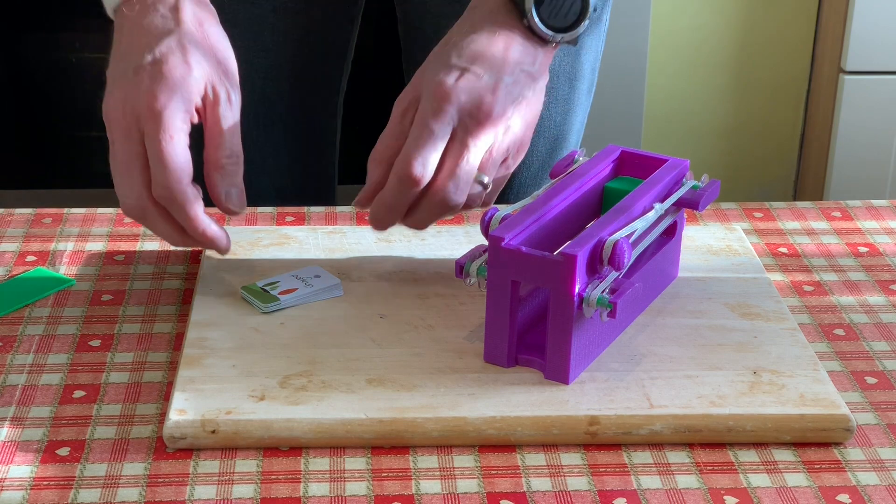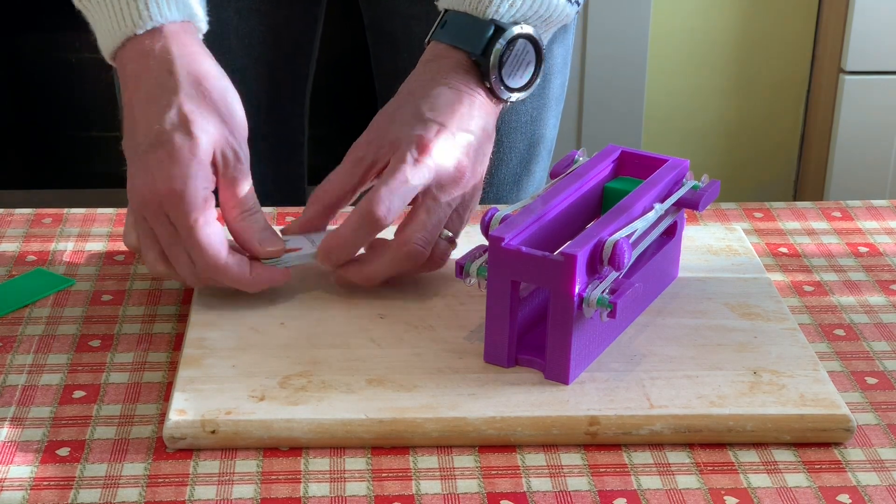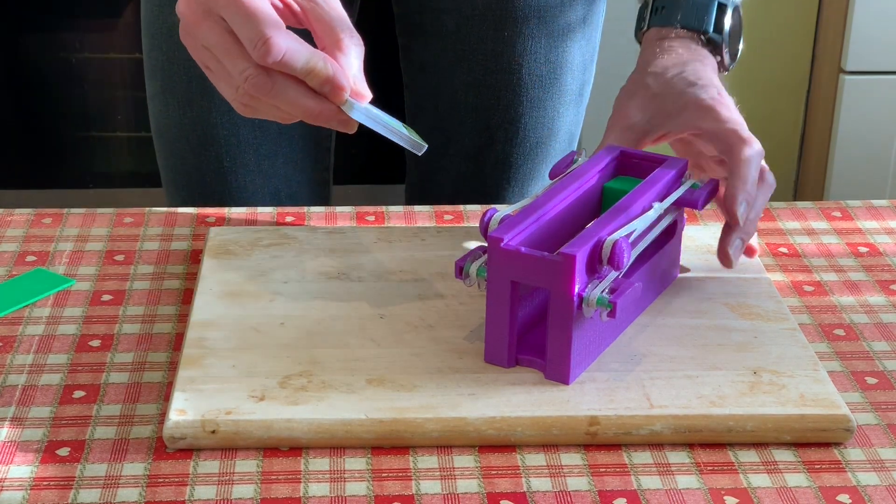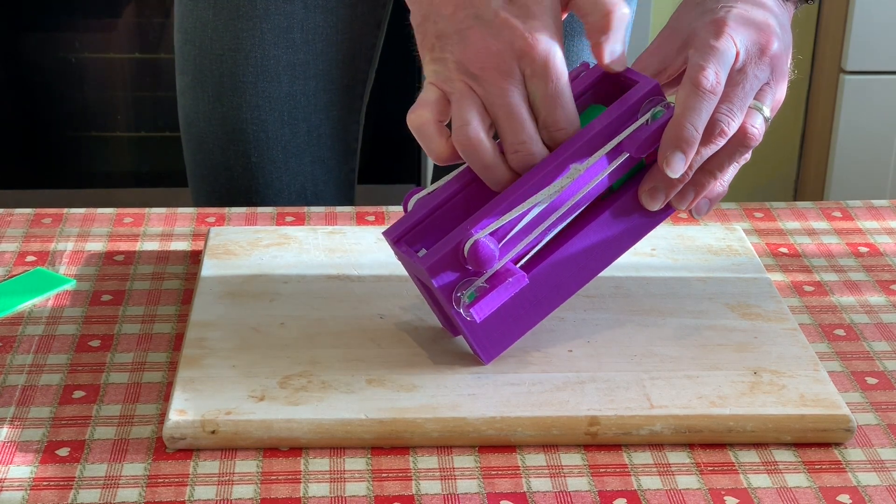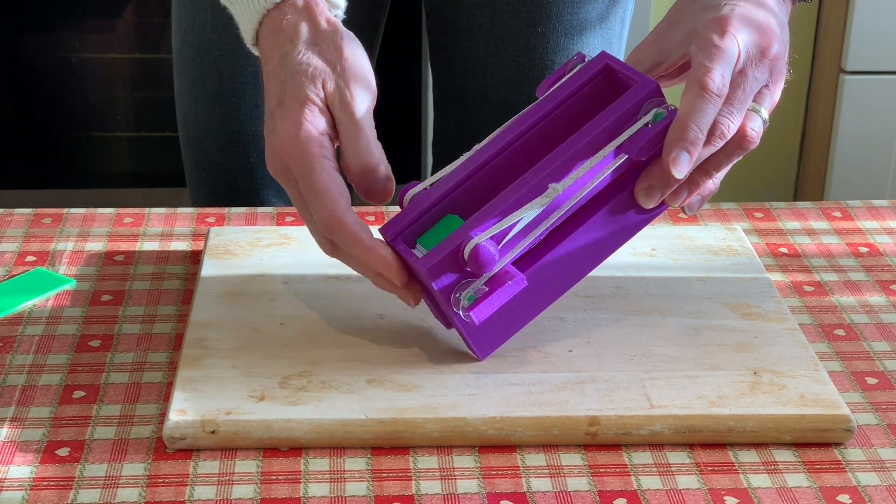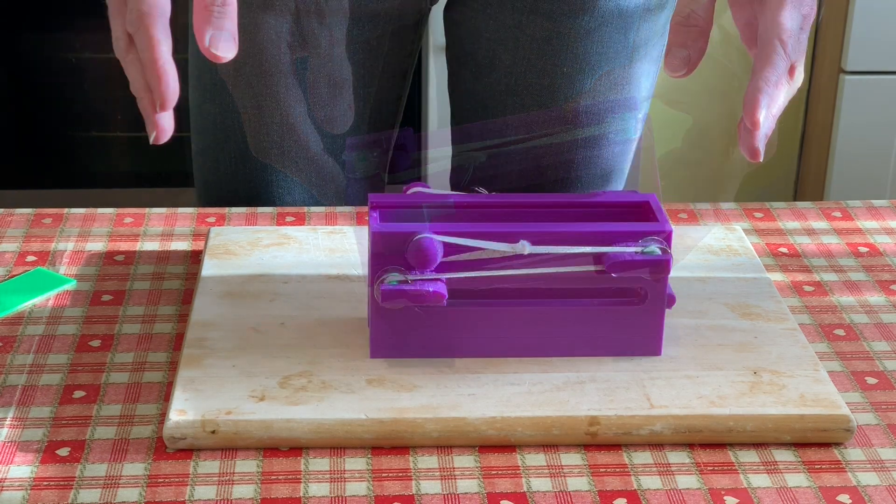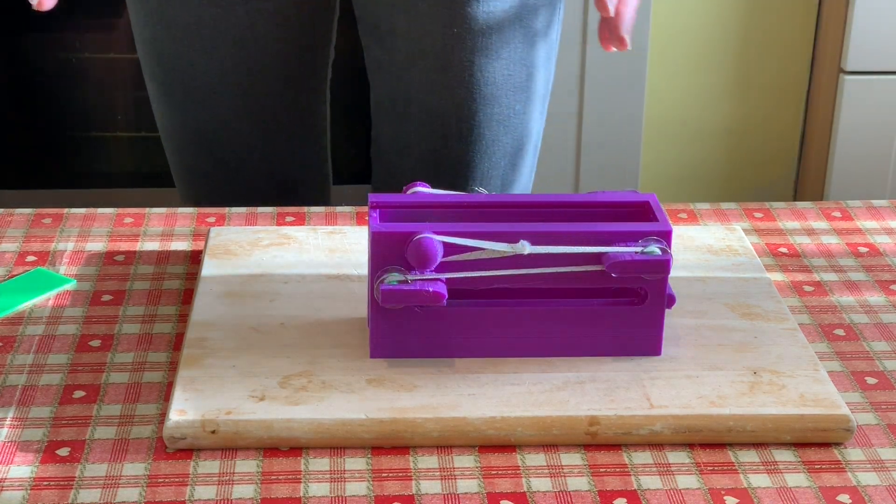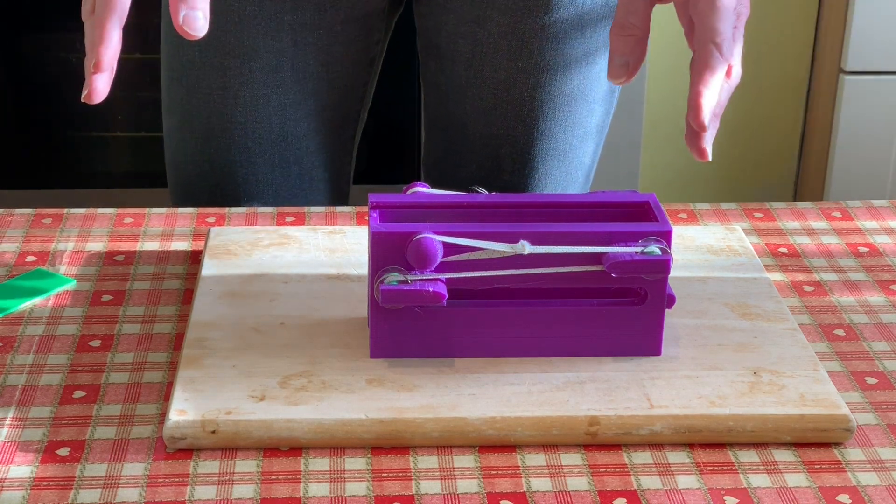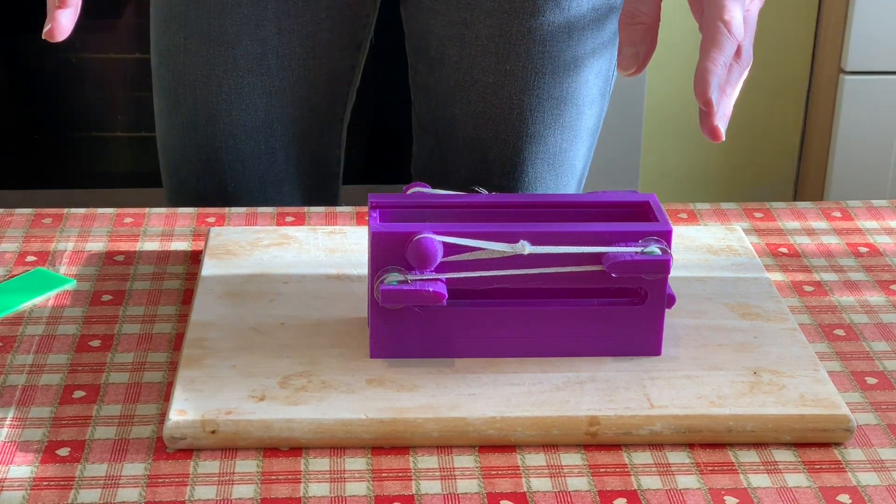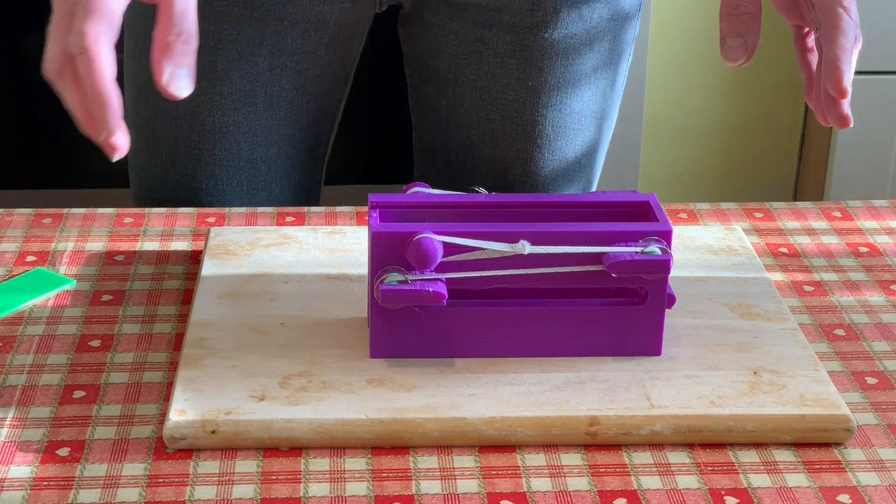To load the machine, we place our tokens into the dispenser and then release the block to hold them in place. This one I reckon can take 140 tokens, but I know there are tokens out there that are thicker and not so many will fit in, so use your common sense.